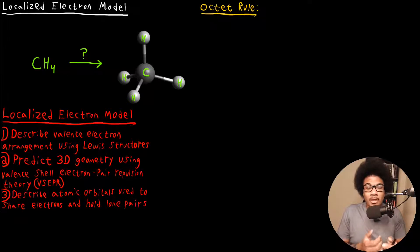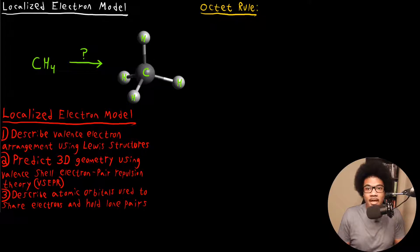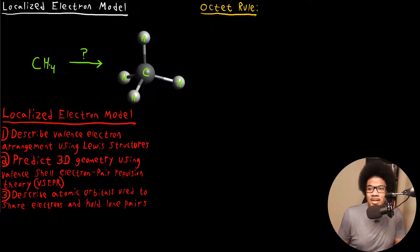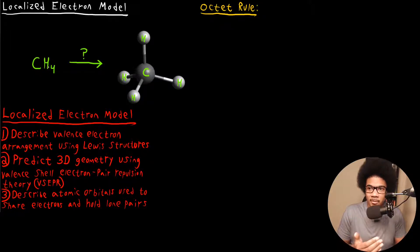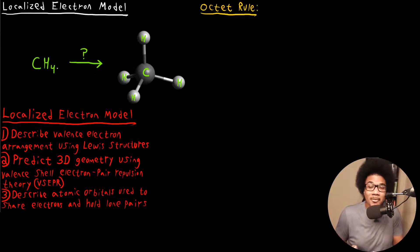In this video, we're going to introduce the localized electron model. Here I've shown a three-dimensional molecule — this is methane, CH4. You can see that the carbon atom is in the middle, and it has four bonds to the hydrogens on the outside at very specific angles and orientations. The question is, how do we get from knowing the molecular formula for methane — one carbon and four hydrogens — to this three-dimensional structure?